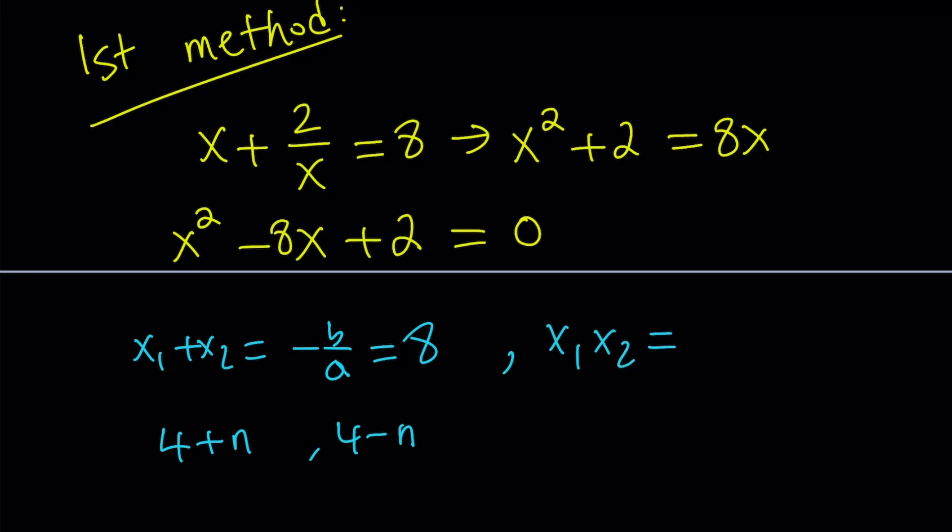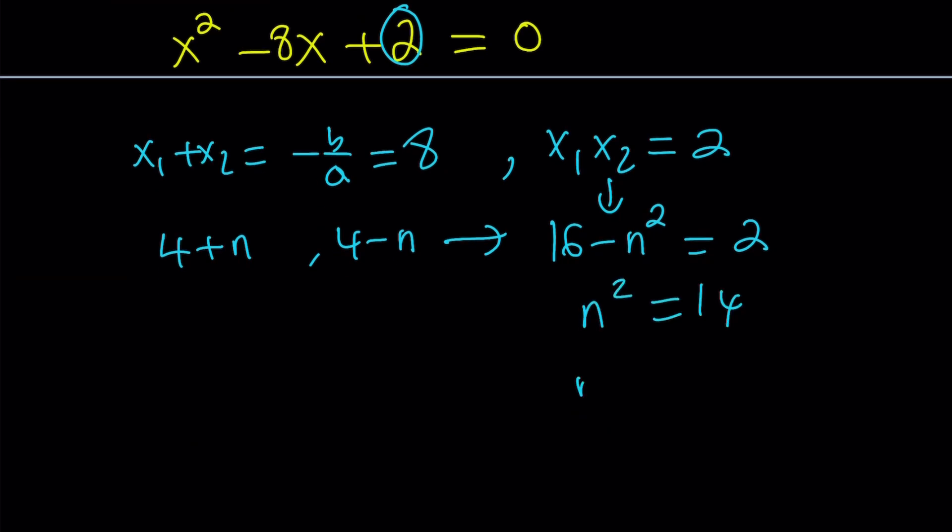which is 2 in this case. So if you multiply these two numbers, you get 16 minus n squared from difference of two squares. And that's equal to 2. And then from here, n squared equals 14, and n becomes plus minus square root of 14.